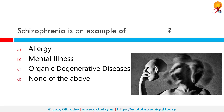Schizophrenia is an example of mental illness. Schizophrenia is a chronic and severe mental disorder that affects how a person thinks, feels, and behaves. People with schizophrenia may seem like they have lost touch with reality. Although schizophrenia is not as common as other mental disorders, the symptoms can be very disabling.